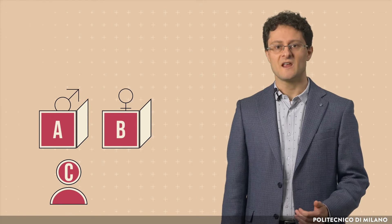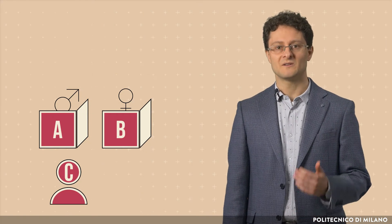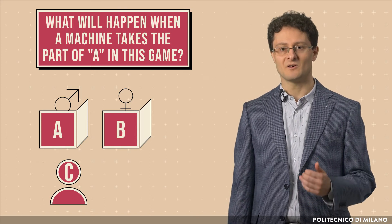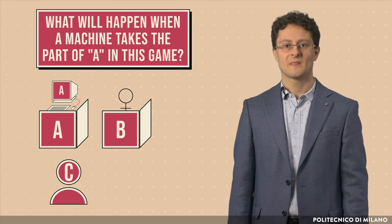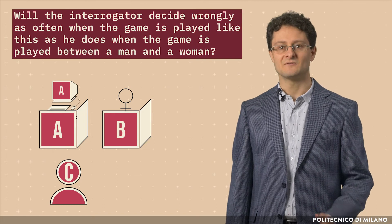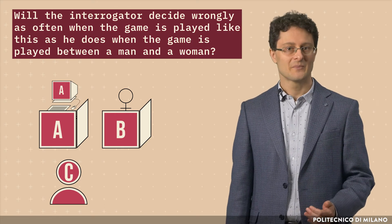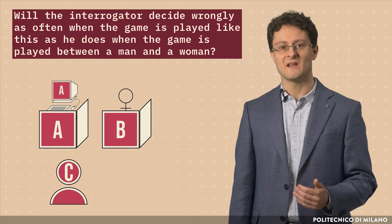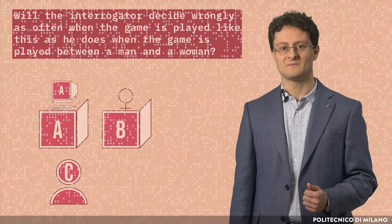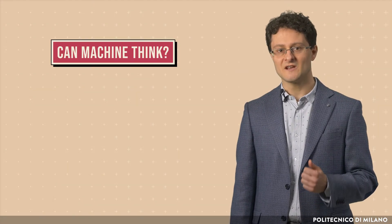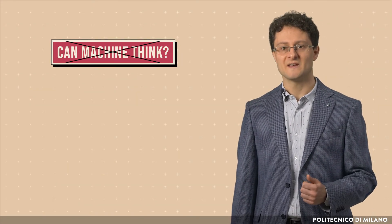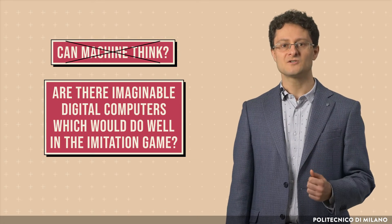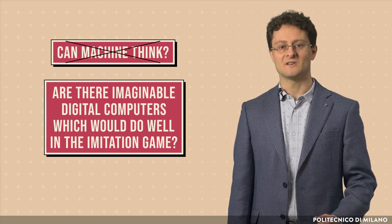Once given the imitation game, the question posed by Turing was: what will happen when a machine takes the part of A in this game? Will the interrogator decide wrongly as often when the game is played like this as it does when the game is played between a man and a human? The original question, can machines think, should be replaced with: are there imaginable digital computers which will do well in the imitation game?